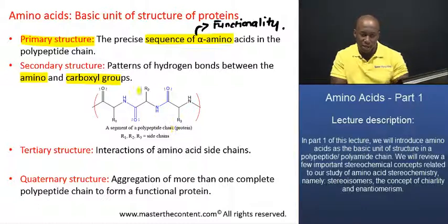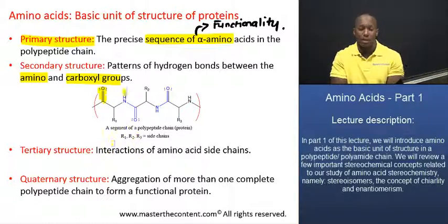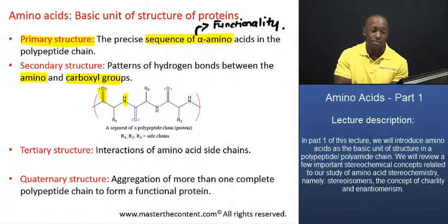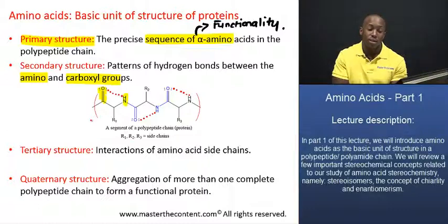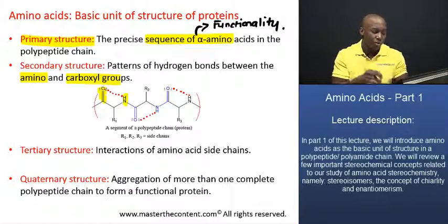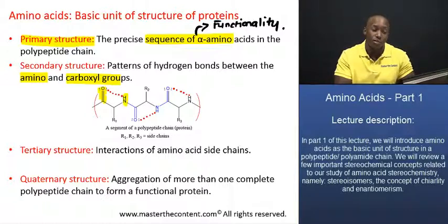I'll direct your attention to the diagram at the center of the screen. In a polypeptide chain, you'll notice these carbonyl groups in what we call the backbone of the amino acid chain. We also have these amino groups bonded to hydrogen. A hydrogen bond can form between this hydrogen atom and that oxygen — and that can happen in various different parts within that polypeptide chain. A hydrogen bond is basically a bond formed between a proton bonded to a highly electronegative element and another highly electronegative element. This internal hydrogen bonding is what gives rise to the secondary level of organization, resulting in the formation of what we refer to as alpha helices and beta pleated sheets.